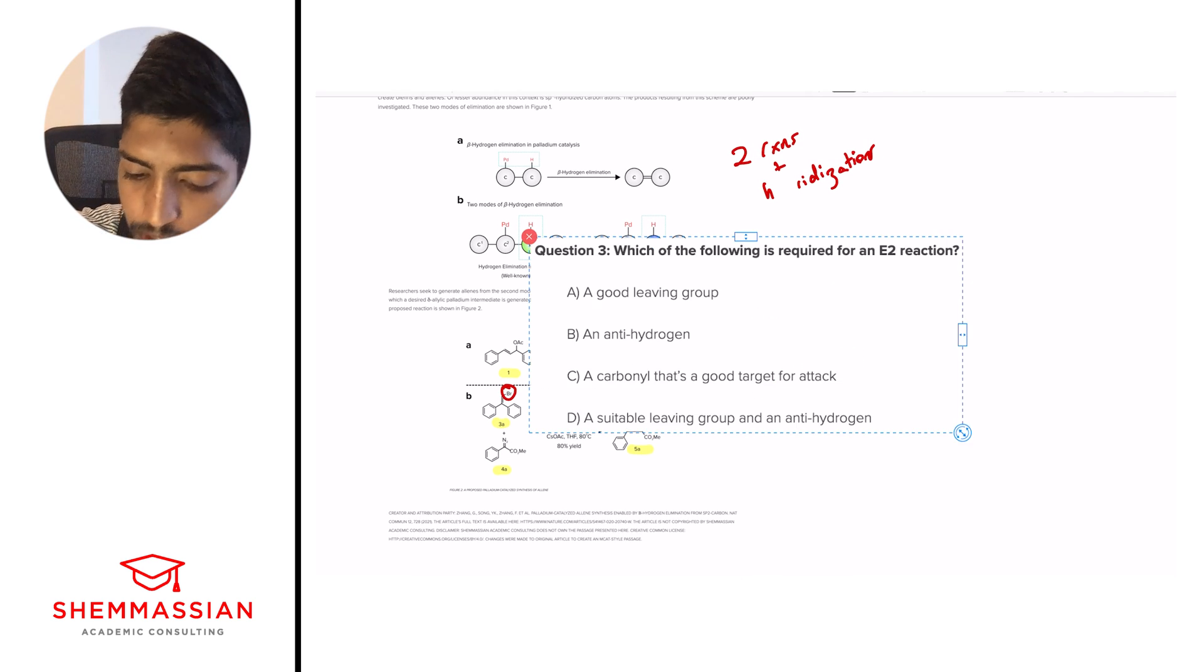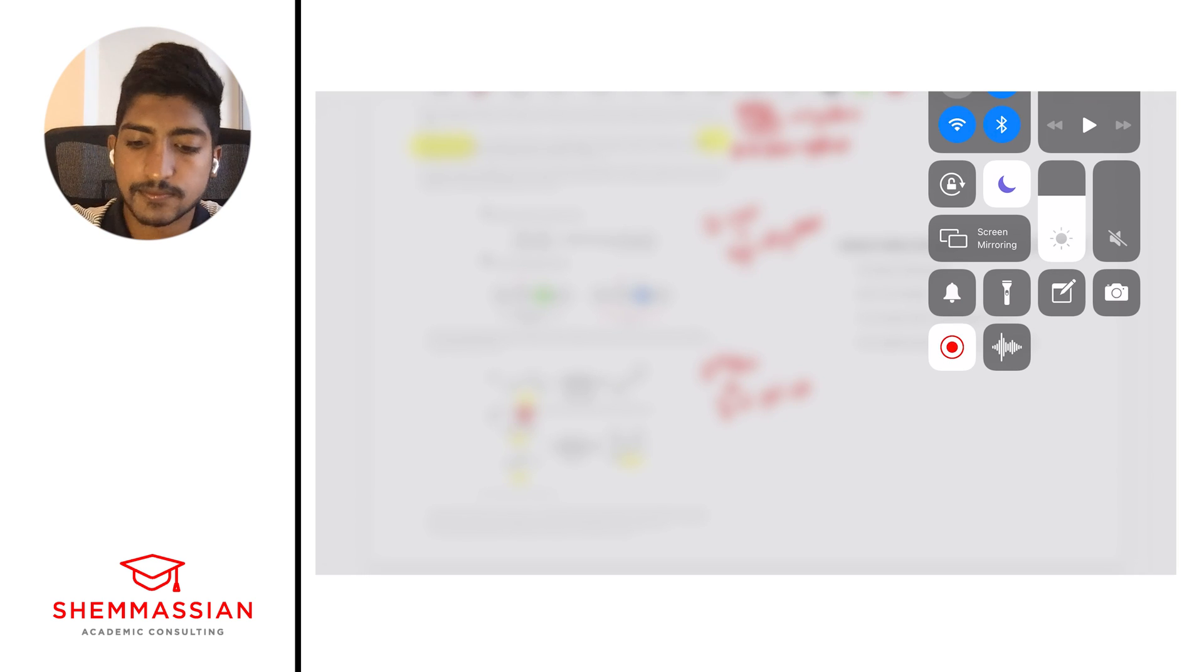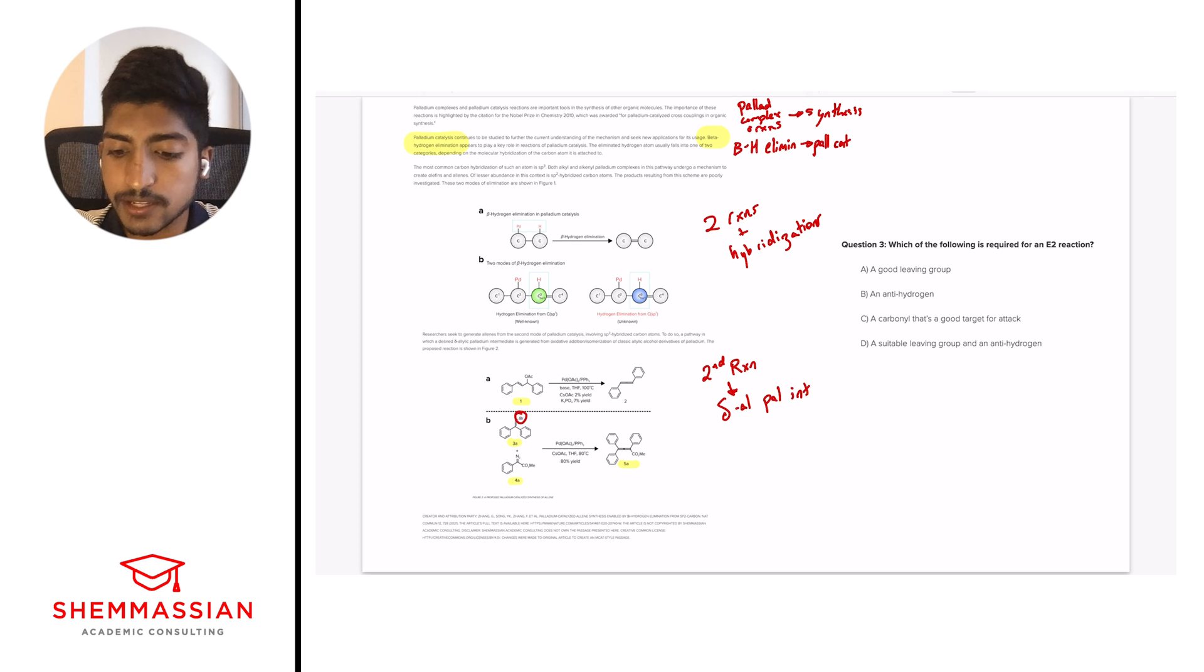All right. Let's go on to question number 3. All right. Great. Question number 3. Which of the following is required for an E2 reaction? A, a good leaving group. B, an antihydrogen. C, a carbonyl that's a good target for attack. Or D, a suitable leaving group and an antihydrogen. And so these types of questions are pretty common. You need to have the understanding of what an SN1, an SN2, an E1, and an E2 reaction are. And these are four stable reactions where you don't need to know as in depth that you might see on an orgo final. But you do need to know some familiarity with these types of reactions. Okay. And so just so we have familiarity, let's draw out what an E2 reaction looks like. Okay. So there's going to be an H. Let's say a Br. And then let's just put a CH3 and a CH3. And then we'll have another CH3 and a CH3O2. Okay. Great.